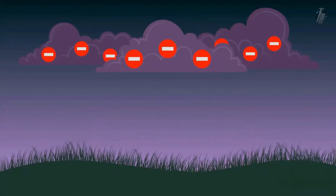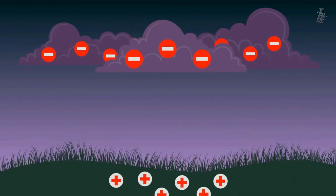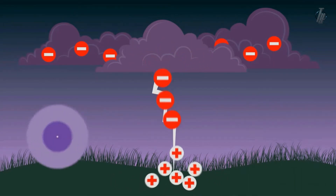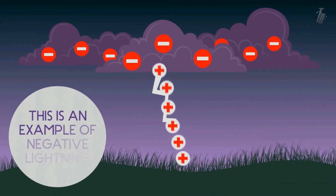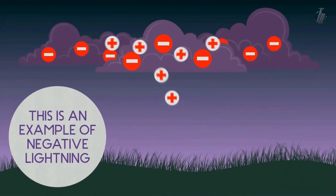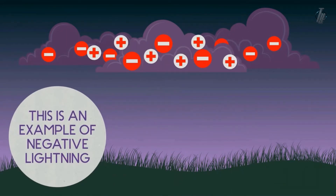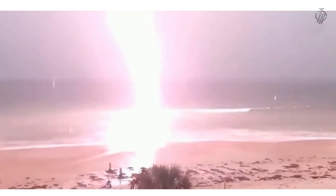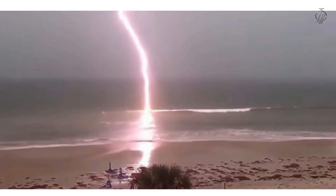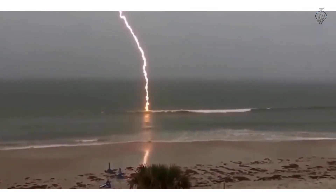When negative charge accumulates in the cloud, to become neutral, the earth's positive charge is attracted from the ground. And this earth's positive charge, in a very short time, is attracted toward the negative charge in the cloud. What we see as lightning or a flash of light is exactly this discharge.